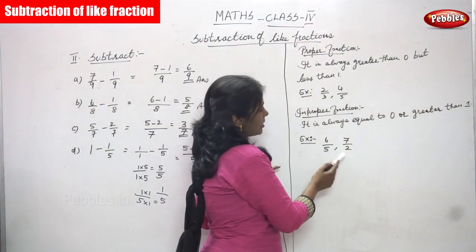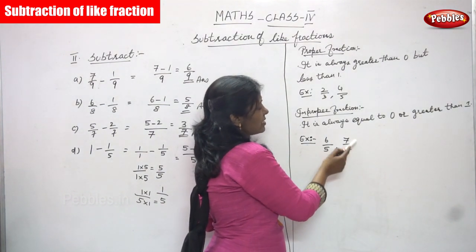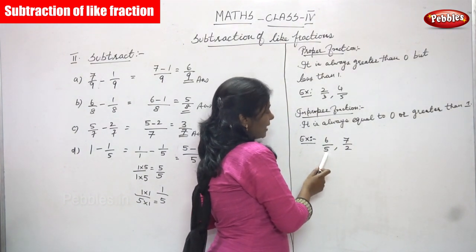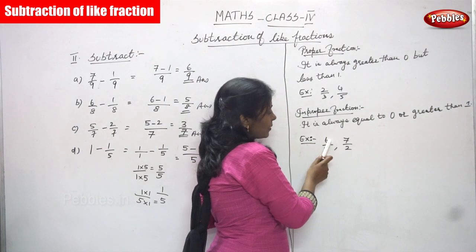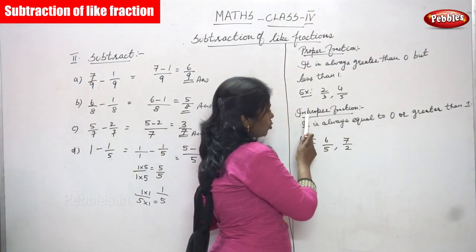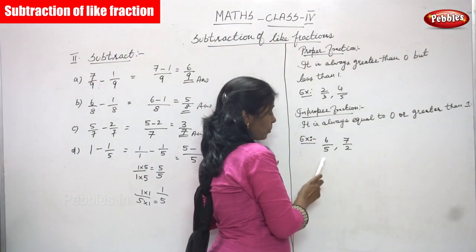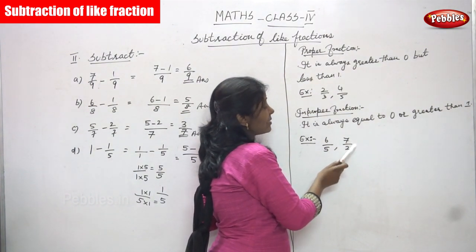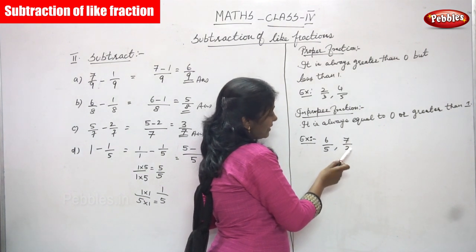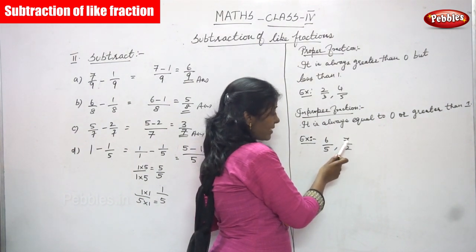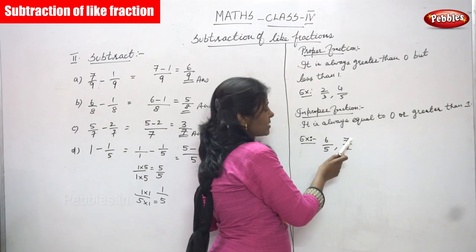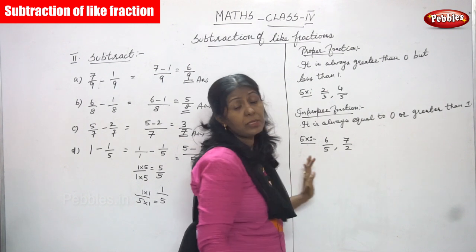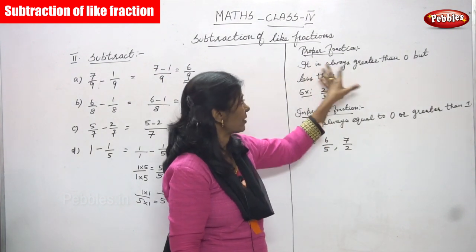Examples of improper fractions are 6/5 and 7/2. In 6/5, the numerator 6 is greater than the denominator 5, so it is an improper fraction. In 7/2, the numerator 7 is greater than the denominator 2, so 7 is greater than 2 — that is why it is an improper fraction.